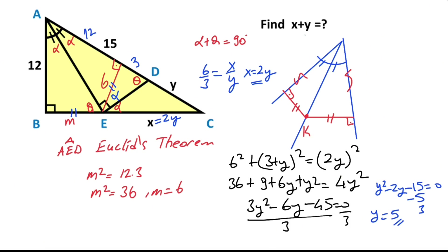So y equals 5 and x equals 10, because x is two times y. That means the sum of x and y must equal 15 units. In addition, if you notice, this triangle is a 6-8-10 special right triangle.